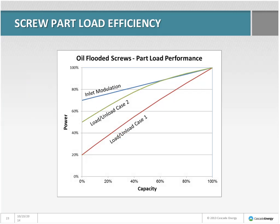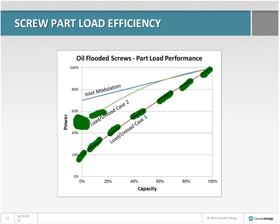With load-unload control on screw compressors, if we have a good setup and compressors that unload well, we can have a very nice part-load curve. A well-configured compressor uses about 20% power when fully unloaded. With sufficient tank volume, the part-load line is nearly straight — pretty efficient operation across a wide range. But if a compressor doesn't unload far — holding 40 or 50 PSI in the sump — it might still use 50% power even after five minutes unloaded, and with little tank volume it will cycle quickly, giving poor part-load performance.